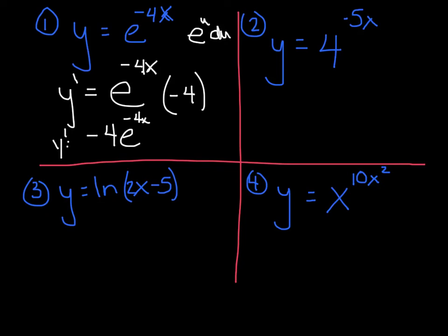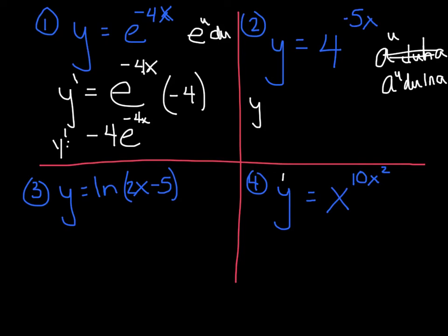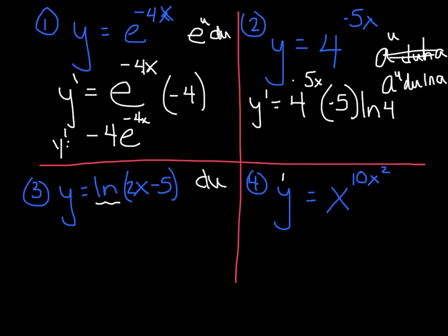Number two: y equals 4 to the negative 5x. This rule is very similar, except the base is a constant a instead of e, so I'm saying a to the u du, and we have one extra step multiplied in - the ln of a. So y prime is 4 to the negative 5x, leave it alone, times the derivative of the exponent, then times the ln of 4. Number three: when I see ln already in the problem, I'm saying to myself du over u. My u is 2x minus 5, and its du - its derivative - is 2.